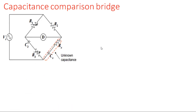So this is the circuit of the capacitance comparison bridge. The first arm consists of R1, the second arm consists of R2, the third arm consists of resistance R3 and reactive component C3, and the fourth arm consists of Rx plus a reactive component Cx. The unknown capacitance or unknown impedance is connected in the fourth arm.